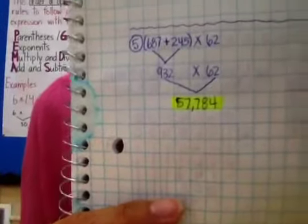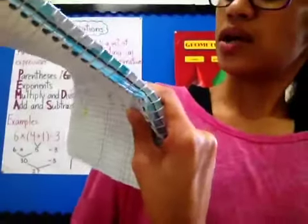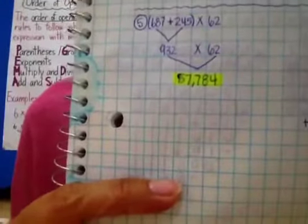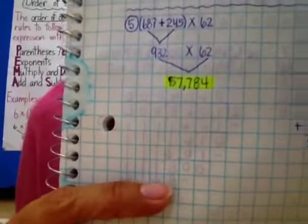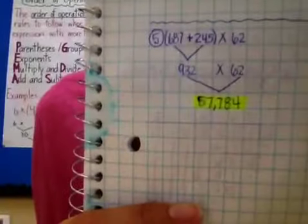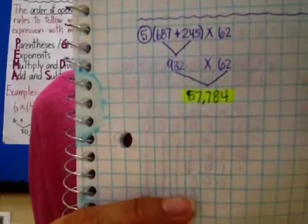Number five — the answer is 57,784. Show your work right there: how you added to get 932, and then show how you multiplied, using either the standard algorithm or the area model.